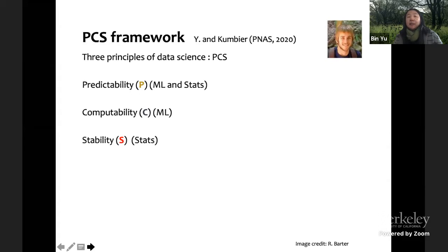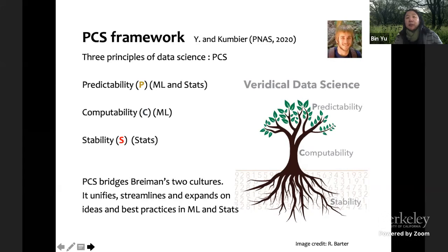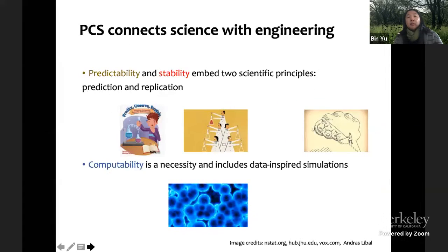And stability is a generalization of uncertainty concept to the whole entire data science life cycle. This basically has three components, trying to bring two cultures, unify streamlines, expand some ideas and best practices from both machine learning and statistics. The PCS framework connects science and engineering. For me, data science is both engineering and science. Predictability and stability embed two very important scientific principles, prediction and replication.